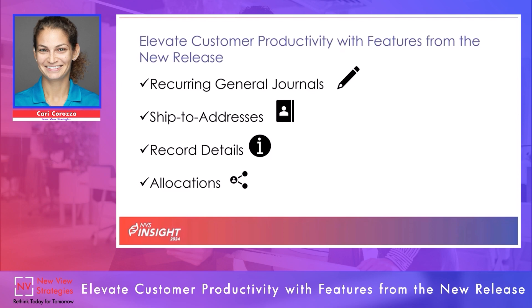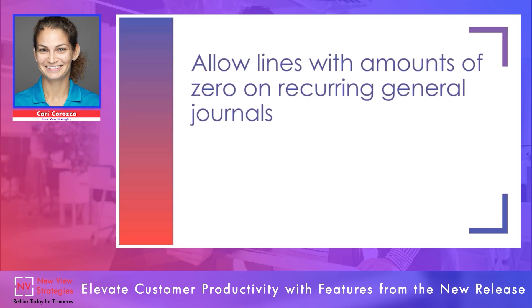My goal is that you have some takeaways that you can share with your customers so that they can work more productively in the system and with less frustration. I'm really excited about this one — we'll now be able to allow lines with amounts of zero on recurring general journals to post.